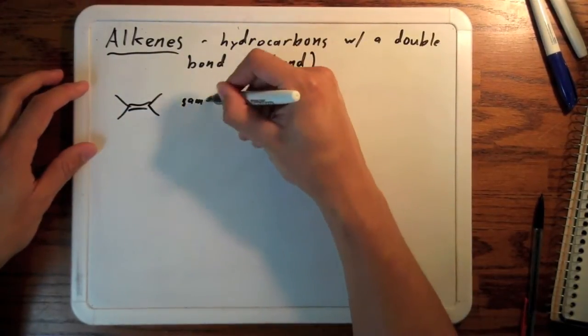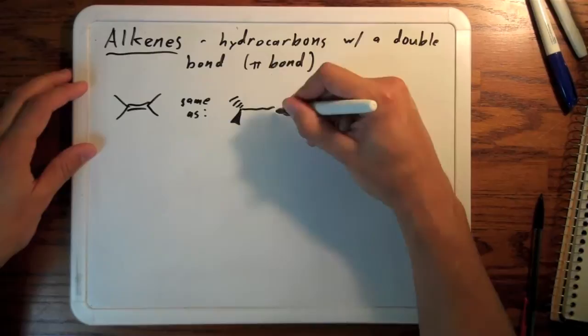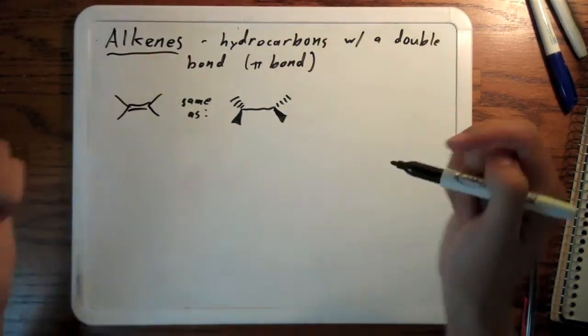Hopefully you're familiar with this notation, as well as wedge and dash notation. That means one bond going up, one bond going down.